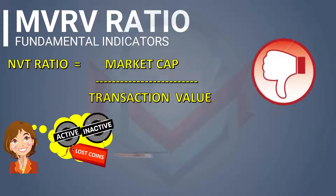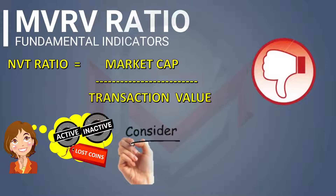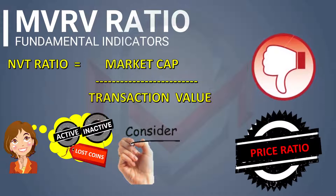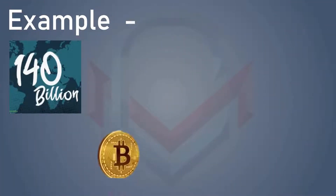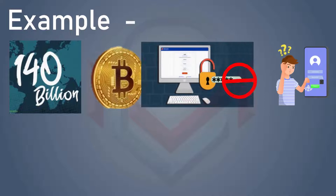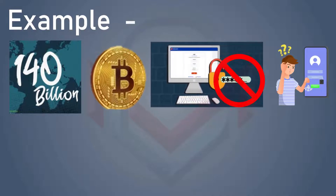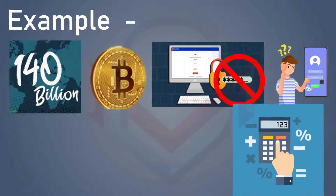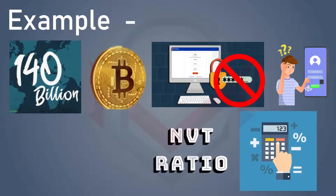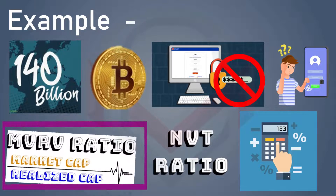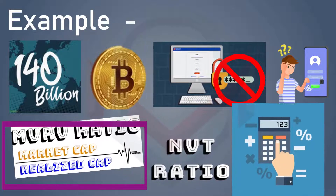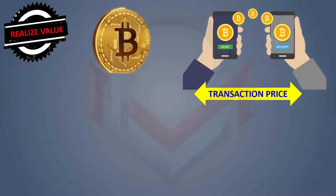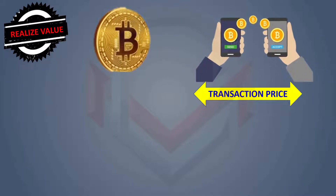We will cover the NvRV Ratio, including the $140 billion worth of Bitcoin wallets where passwords are lost, making those coins unrecoverable. We will also cover the market capital as well as the NVT ratio, and look at the market value versus realized value ratio — the MVRV Ratio.